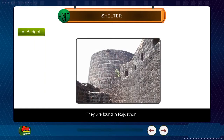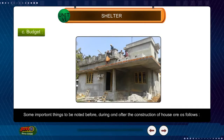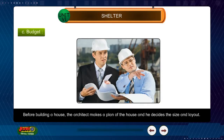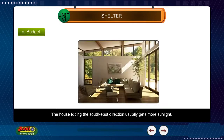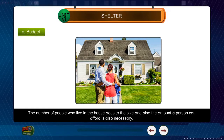Sometimes stones are used to build the walls of houses as they are available in plenty, such as in Rajasthan. Some important things to be noted before, during and after the construction of a house are as follows. Before building a house, the architect makes a plan of the house and decides the size and layout. The house facing the southeast direction usually gets more sunlight. The number of people who will live in the house also determines the size, and the amount a person can afford is also necessary to consider.